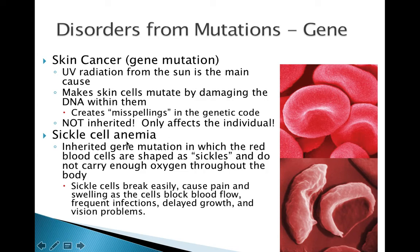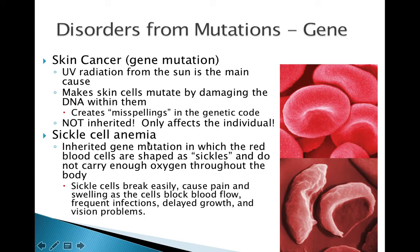Another one is sickle cell anemia, and this is inherited. It's a gene mutation that gets passed on through the sex cells to the offspring. It's where the blood cells are shaped as sickles. Normal red blood cells are healthy, carry lots of oxygen, and keep you alive. Sickle red blood cells are not formed in a nice plump donut shape — they don't flow through your veins comfortably and they jam up and cause clots. A person born with this has a lot of pain because their blood doesn't flow correctly, and they have frequent problems and delayed growth. Since it is associated with the sperm and egg cells, it does get passed on to offspring.